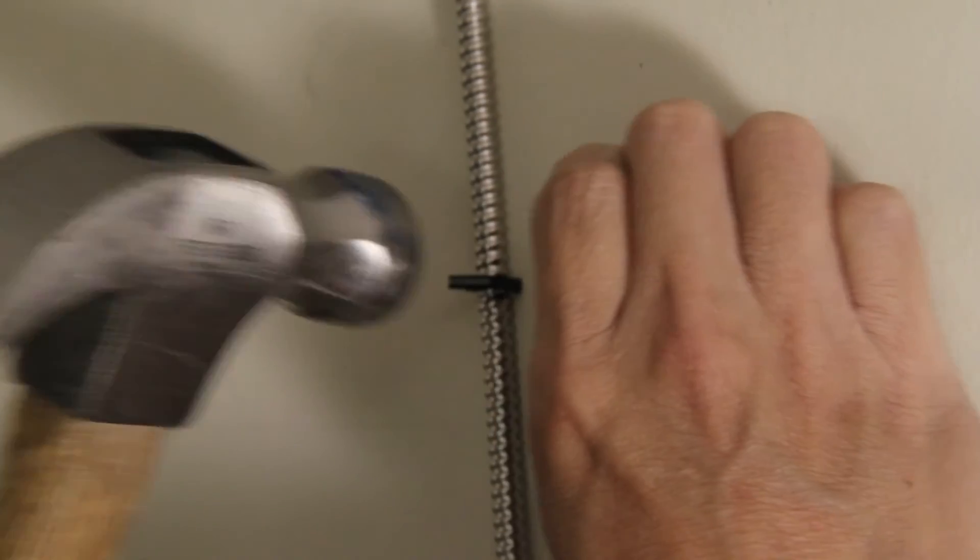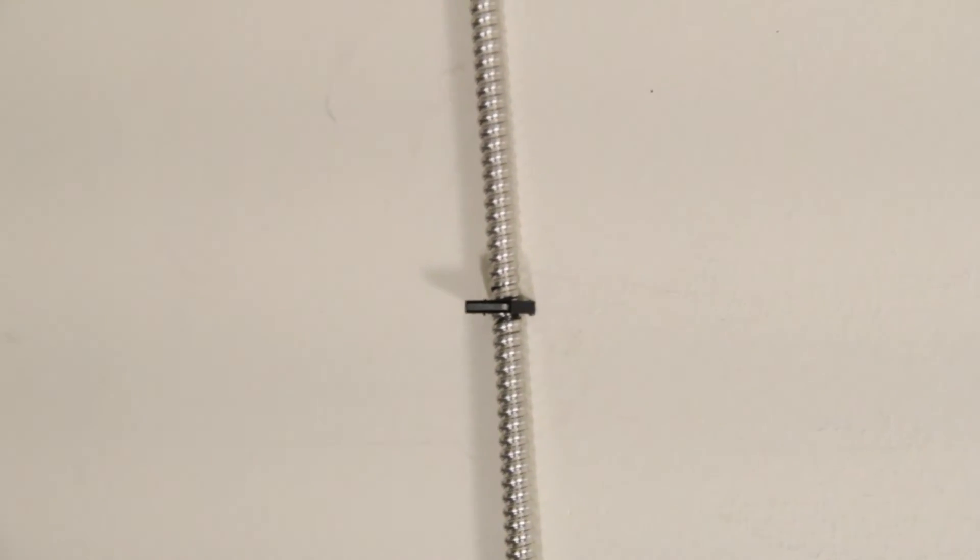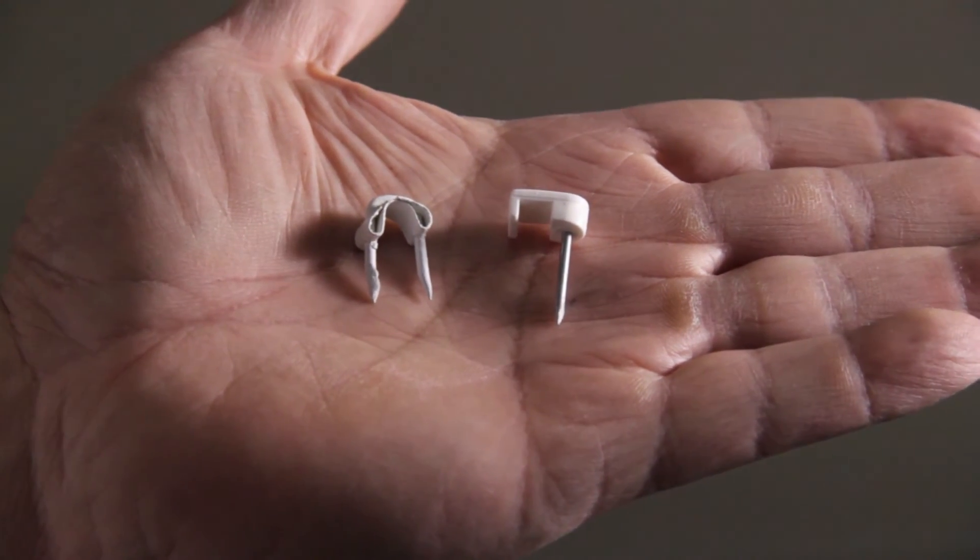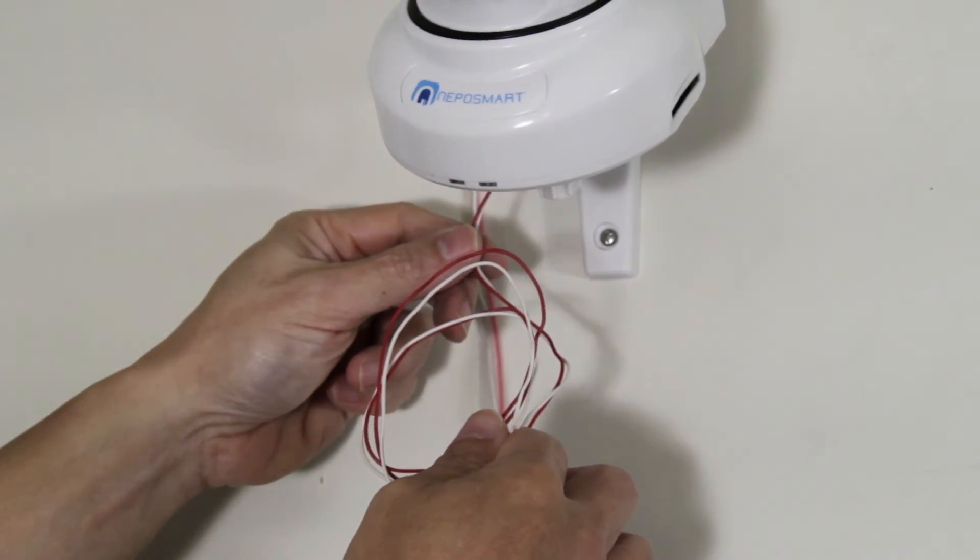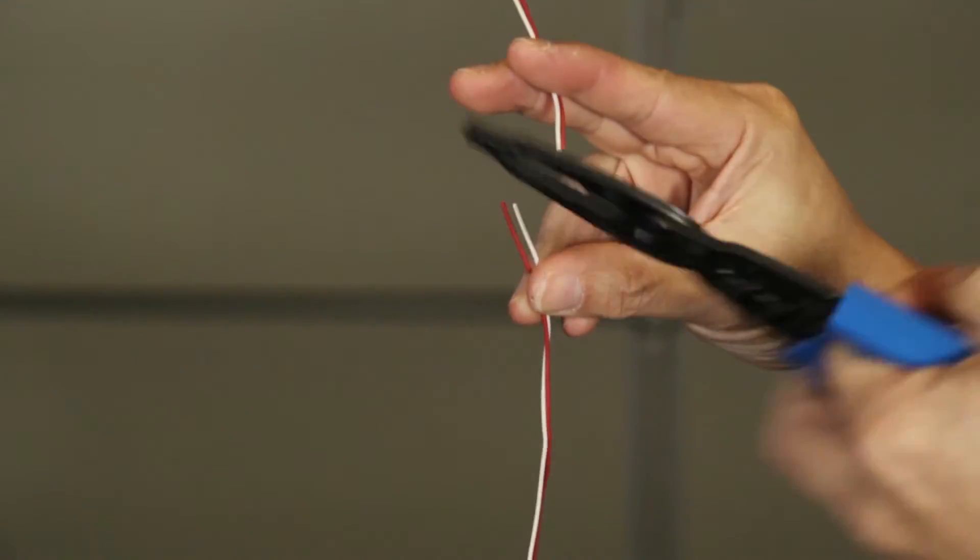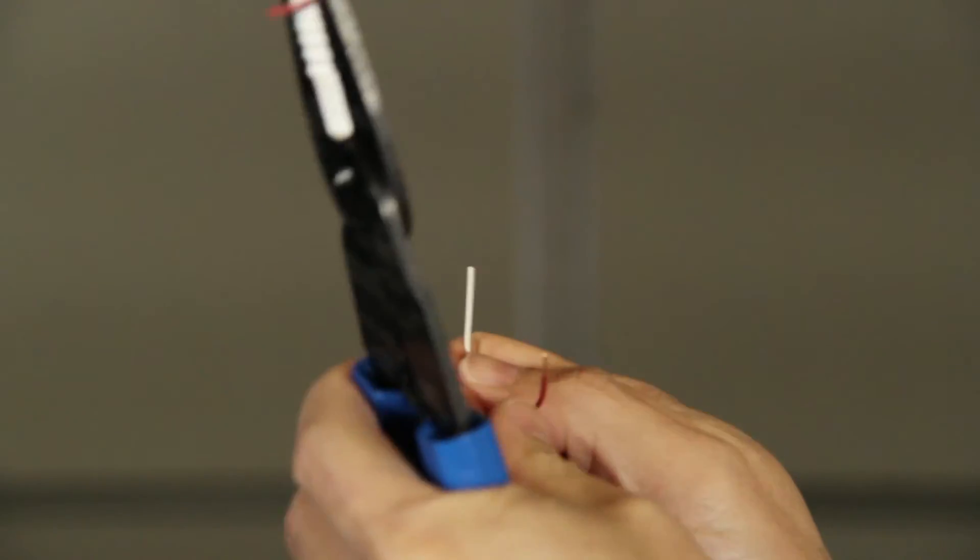Now ensure no wires are dangling by taping or stapling the wires to the wall. We're using staples like these, and tracing the wire that we need along the wall back to the NepoSmart. Cut the wire to length, and strip both of these wires exposing the wire underneath.